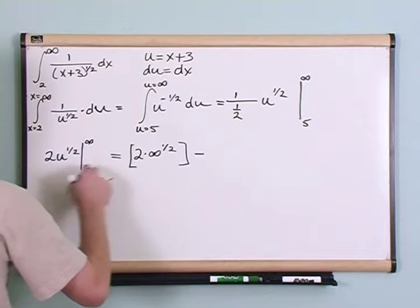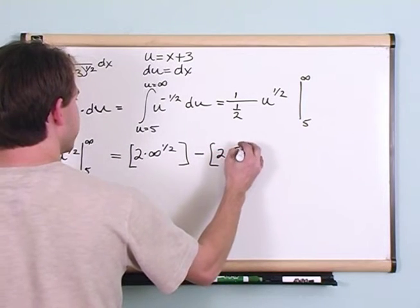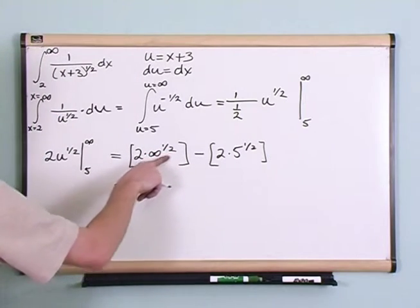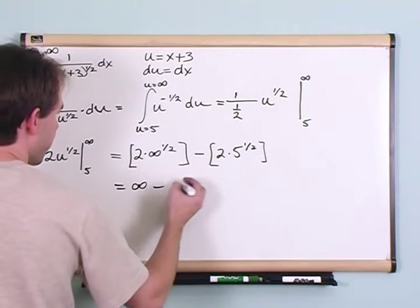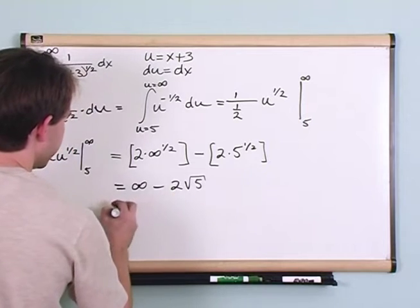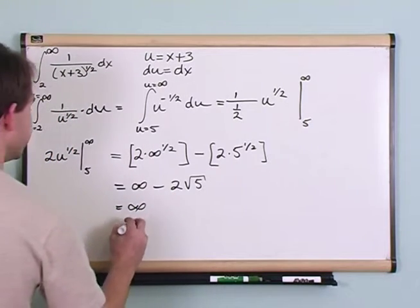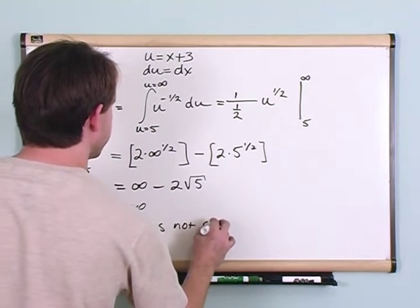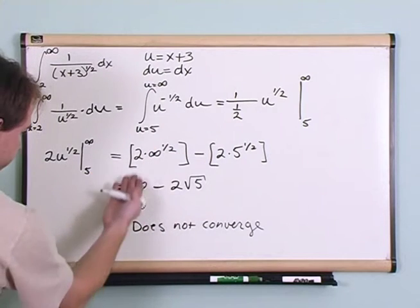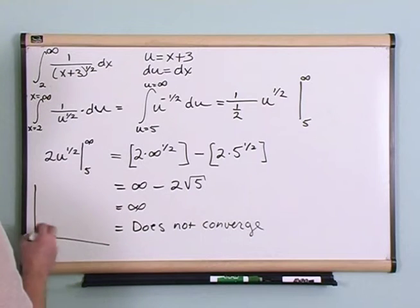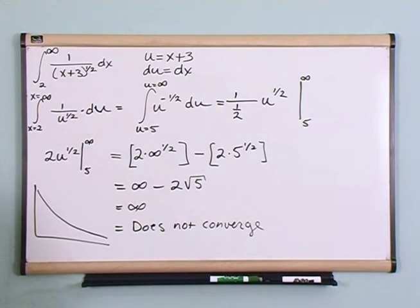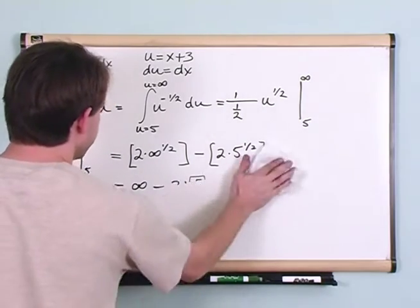Using the fundamental theorem of calculus, we plug in the top value: 2 times infinity to the one-half, and subtract the bottom value: 2 times 5 to the one-half. The square root of infinity is still infinity, so we have infinity minus some small number (2 times the square root of 5), which is still infinity. So in this case, this integral does not converge. You do it just like usual, plug in the limits even if they are infinity, and if it comes out to infinity, the integral doesn't converge.